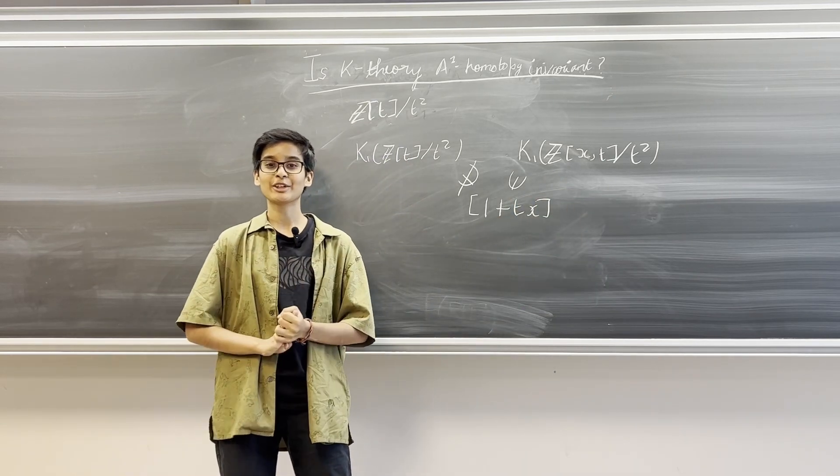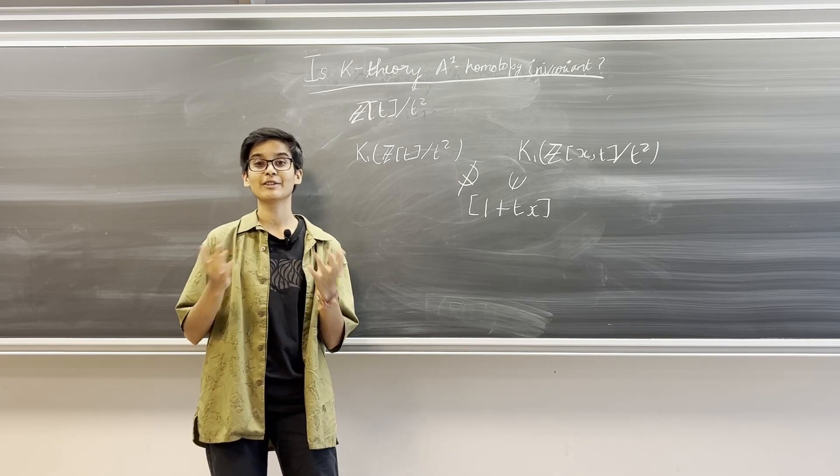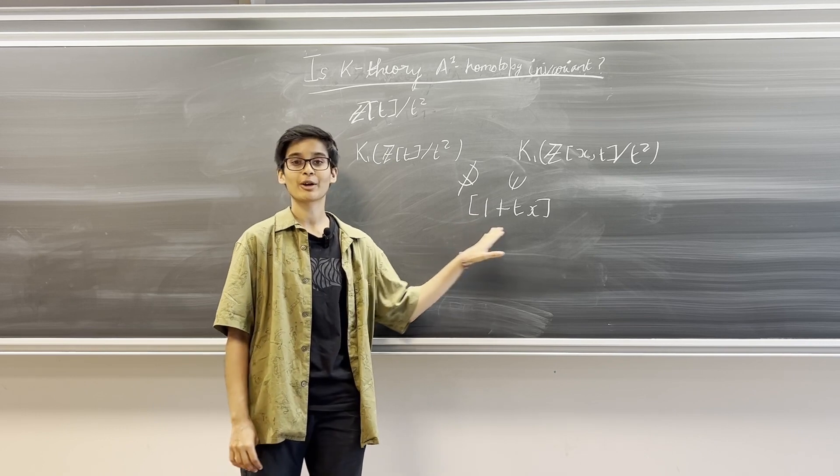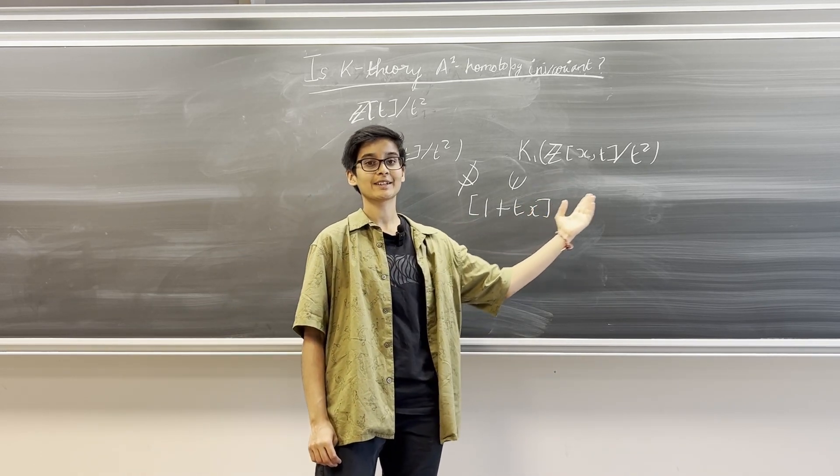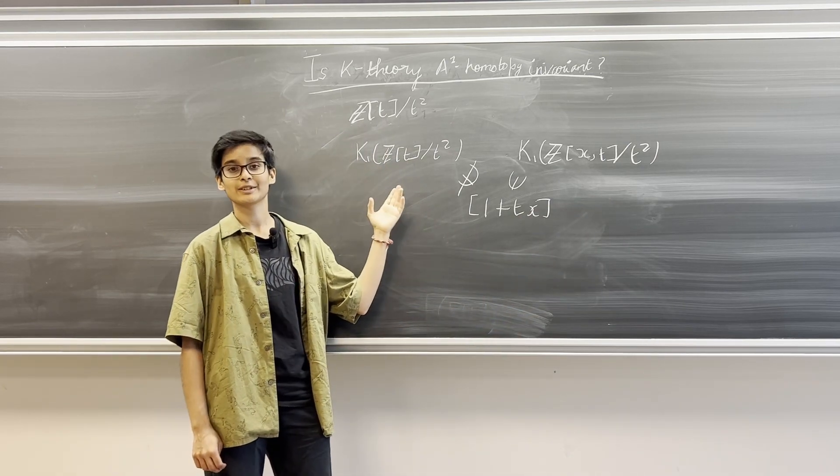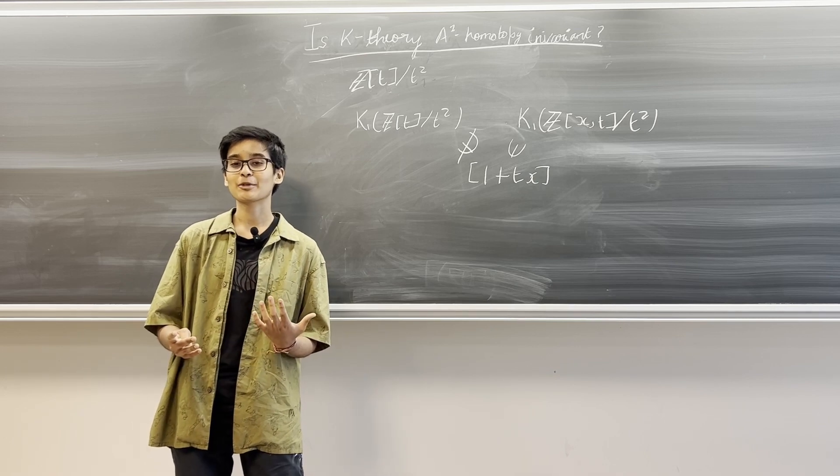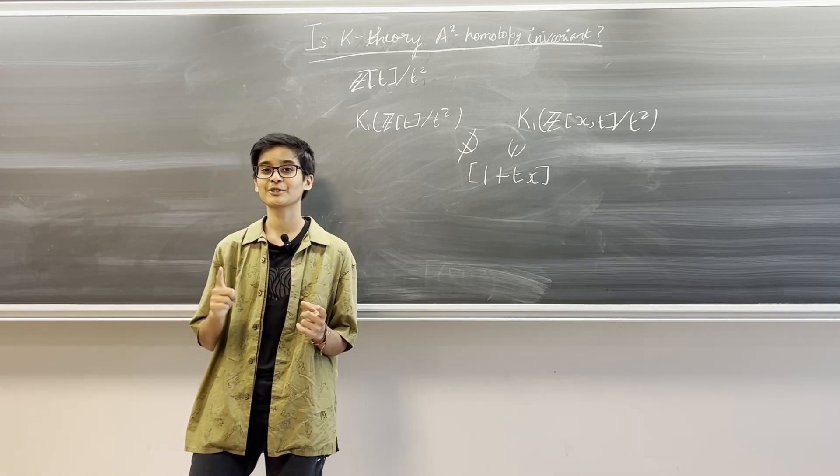We have seen in the video about K₁ that the first K group often contains the invertible elements of the ring, and here we have an element represented by 1 plus TX that is contained in the first K group of ℤ[X,T] over T² but it does not come from this K group. We can see here that K-theory is not always A1 homotopy invariant, but there are certain families of varieties for which this is true.